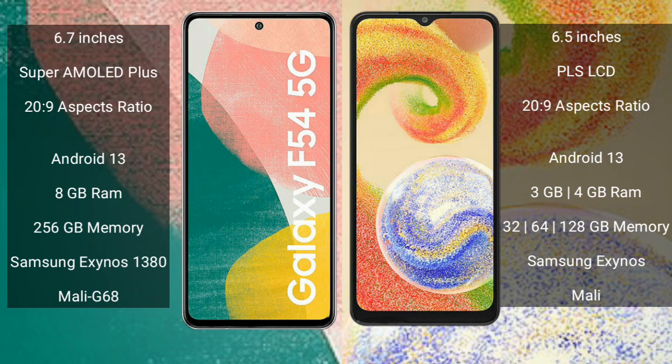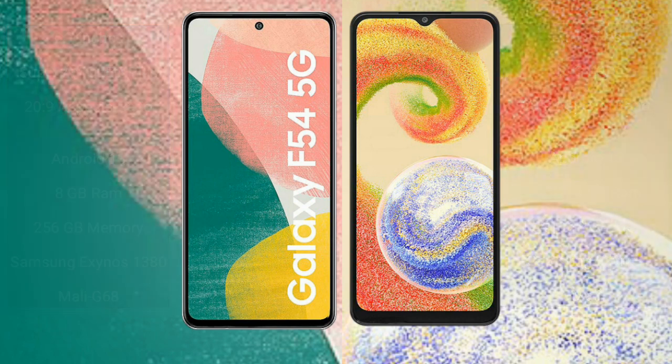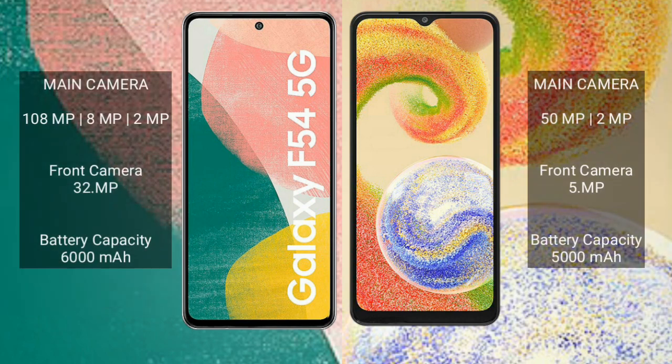Samsung Galaxy A4 comes with 3GB, 4GB, or 6GB RAM and 32GB, 64GB, or 128GB internal storage, with a Samsung Exynos processor and Mali GPU. Samsung Galaxy A54 features a rear triple camera setup: 108MP plus 8MP plus 2MP.